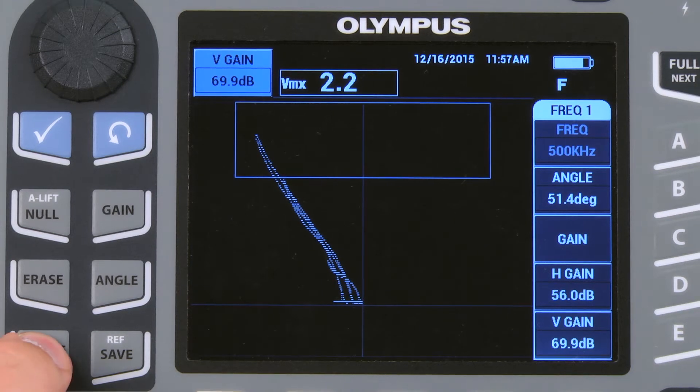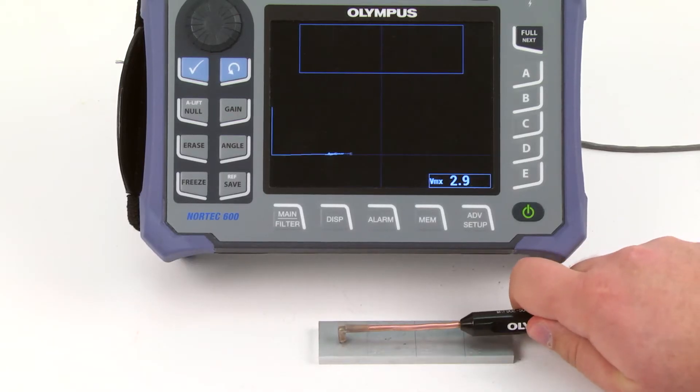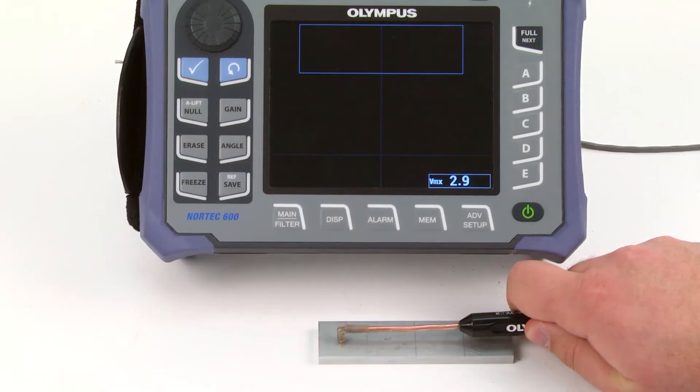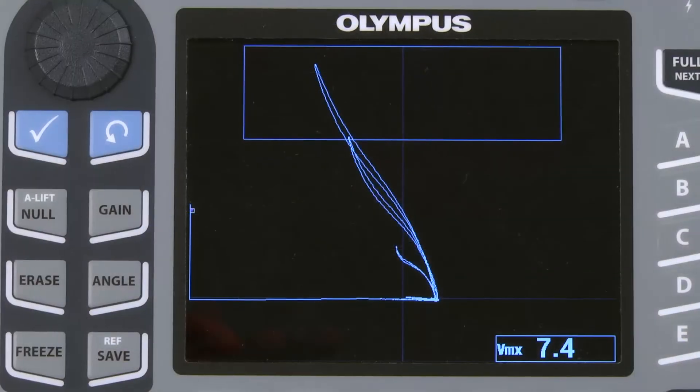Increase the gain so that the highest signal covers about 90% of the screen height. Once completed, press Freeze. Press Full Next to enter Full Screen mode. Place the probe on a defect-free area and press Null. Rescan the standard. The newly acquired scan is now calibrated.